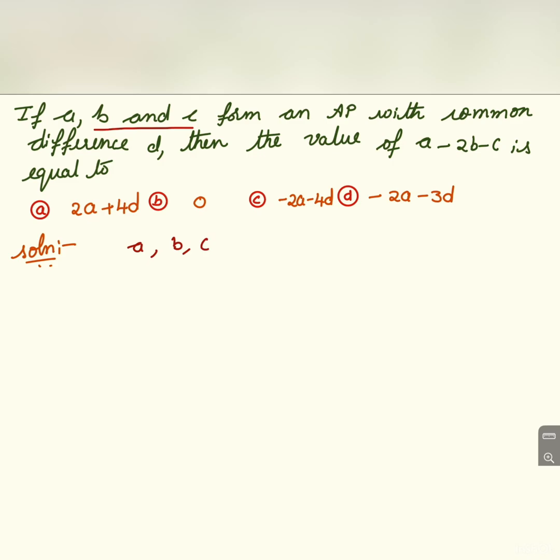If A, B and C form an AP with common difference D, then the value of A minus 2B minus C is equal to what? We have been given four options. Let us see which is the correct option among these four options.